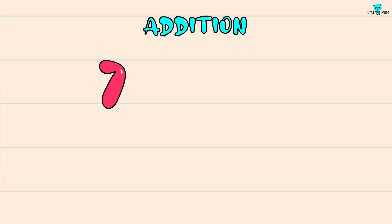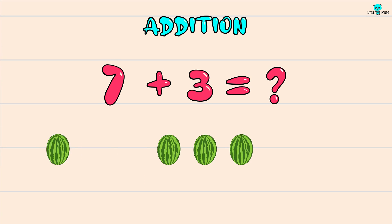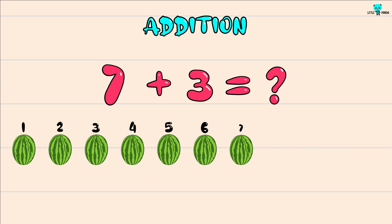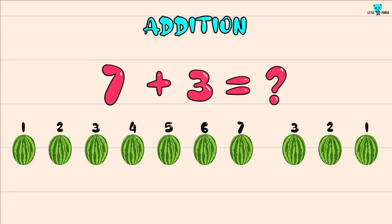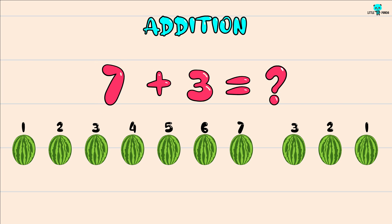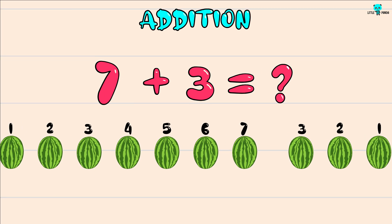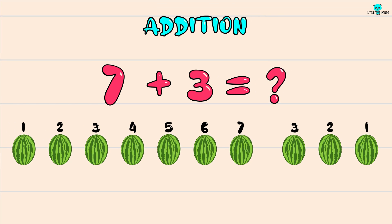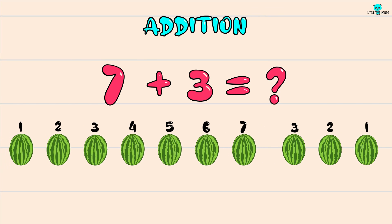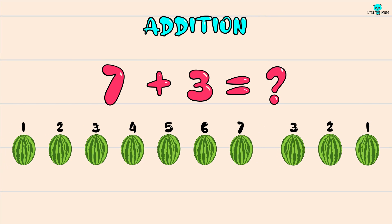Solve this addition problem. We are taking watermelon for example. We have to take a greater number first and add the lesser number. So here the greater number is 7 plus 3 more.